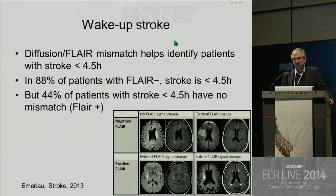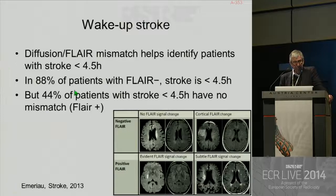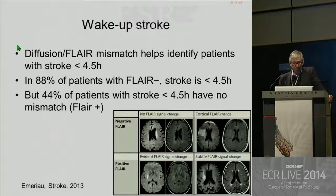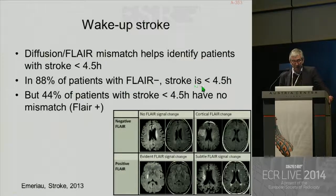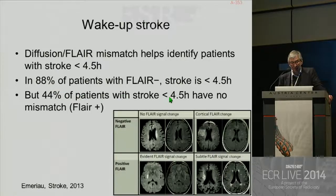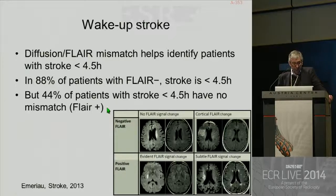Wake-up stroke is very difficult. A lot of strokes are diagnosed when the patient wakes up, and in this situation you don't know the delay from symptom onset to treatment. So you can use what we call the diffusion-FLAIR mismatch: diffusion is positive and FLAIR is negative. In 88% of patients with FLAIR negative, stroke is less than 4.5 hours, so if you have this diffusion-FLAIR mismatch you can probably do IV thrombolysis. But 44% of patients with stroke less than 4.5 hours have no mismatch, meaning FLAIR can be positive before 4.5 hours.